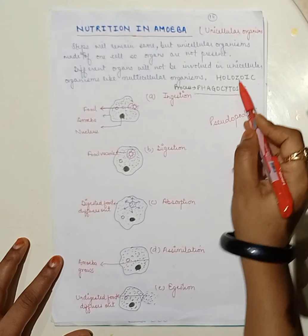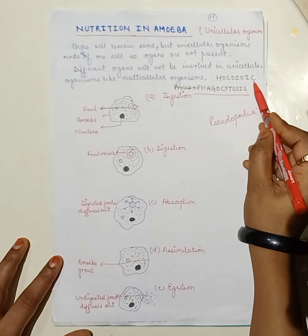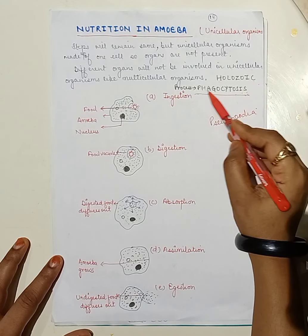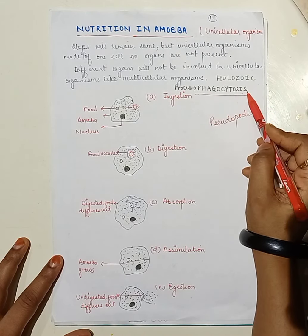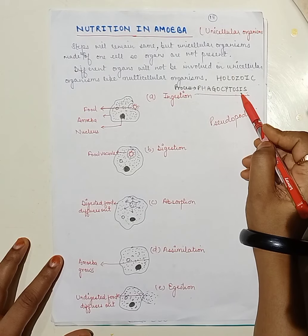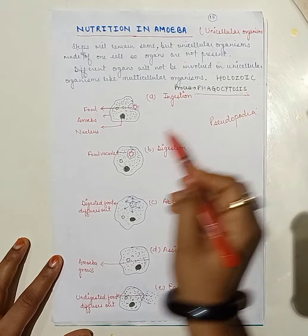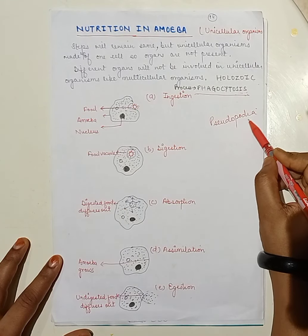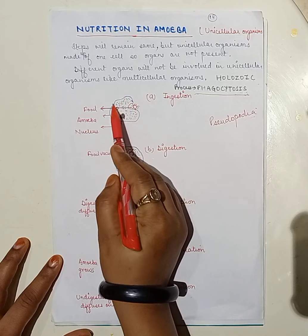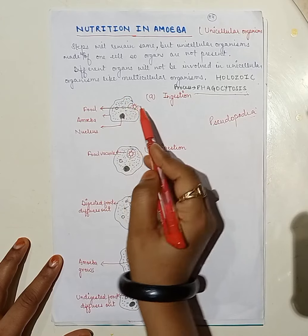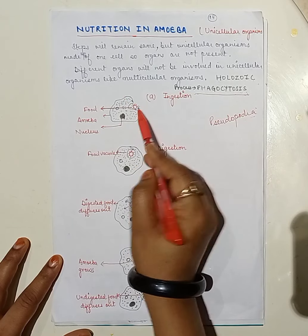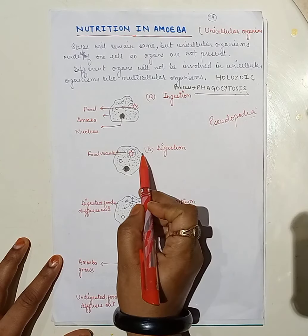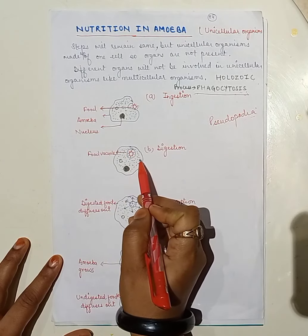The mode of nutrition is holozoic. How does this holozoic nutrition, or phagocytosis, take place in the case of amoeba? Amoeba forms finger-like projections called pseudopodia. Whenever food comes in contact with the amoeba, it forms these finger-like projections called pseudopodia, and the food comes to the body surface.